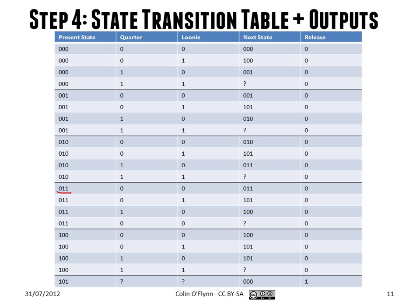If you replace the symbolic states with binary values, you get the encoded table. So 0 cents, 25 cents, 50 cents, 75 cents, $1, and $1.25 are each assigned a binary code. For example, if we're in state 011 — equivalent to 75 cents — and you put in a quarter, you move to state 100, equivalent to one dollar. This representation is something a computer can understand.